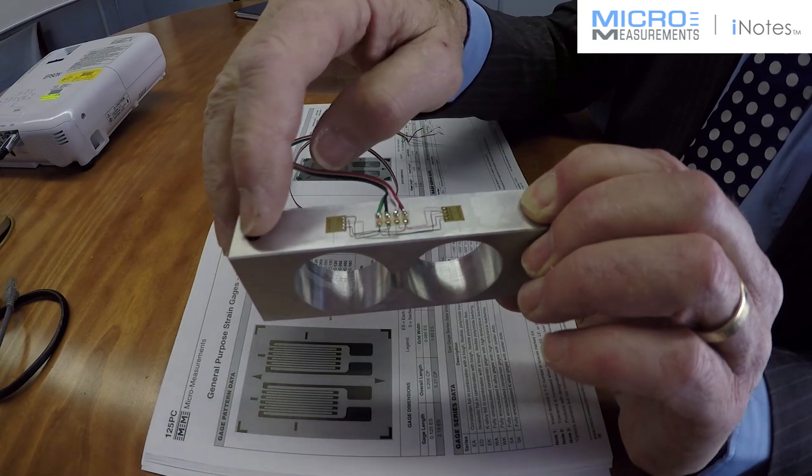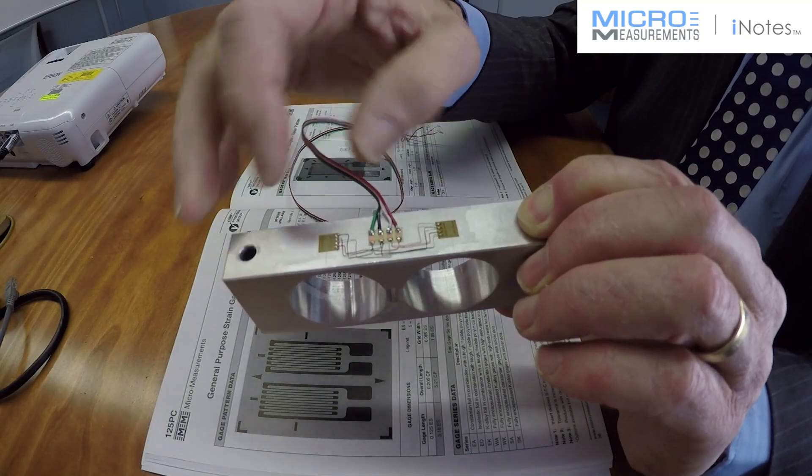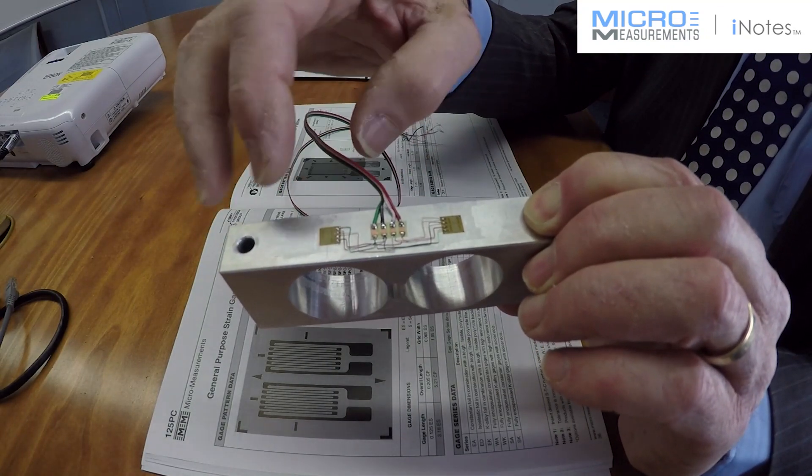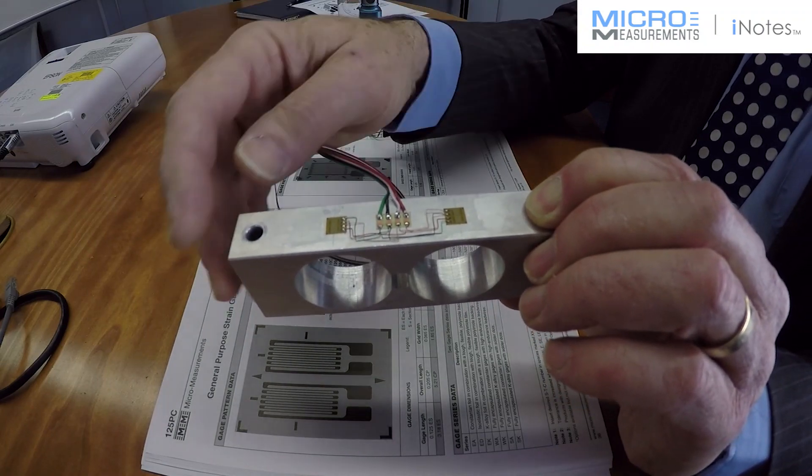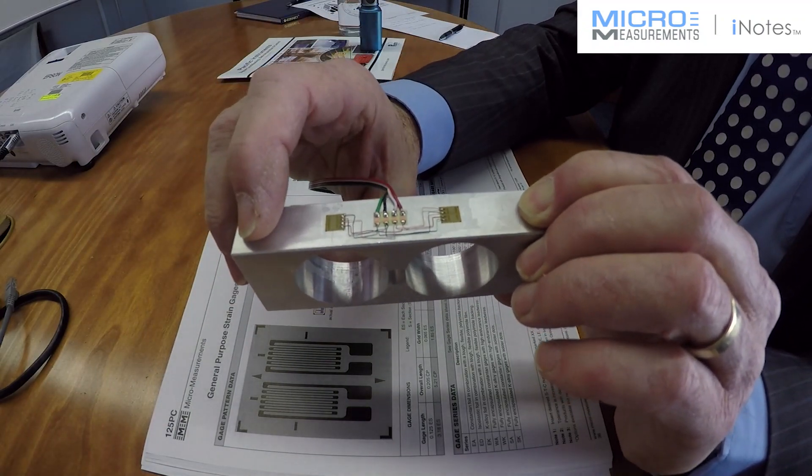So if we have for instance a load which creates 100 microstrain at these points then we will get 400 microstrain through the signal lead. So how do we do this?